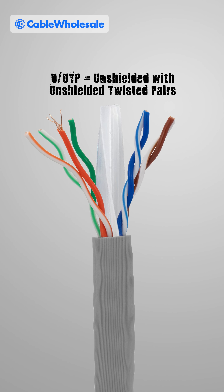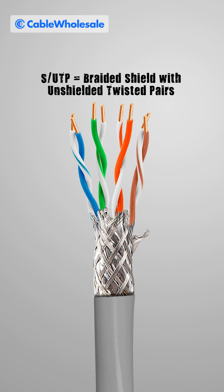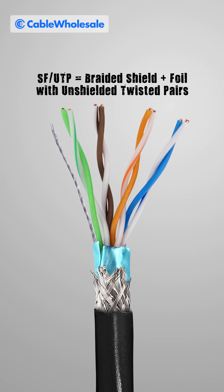U/UTP — no shielding anywhere. It's perfect for homes or low interference spaces. F/UTP has one foil wrapped around all pairs, good for offices with moderate interference. S/UTP has a braided shield around the cable — stronger grounding, great for industrial gear.